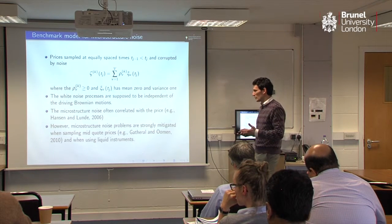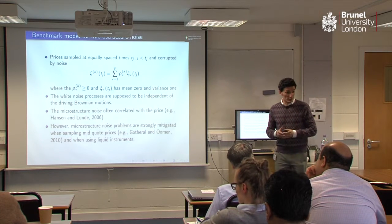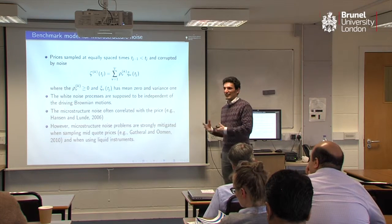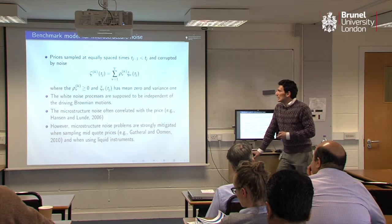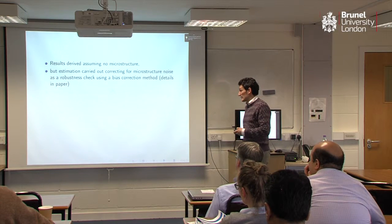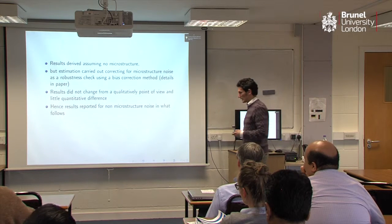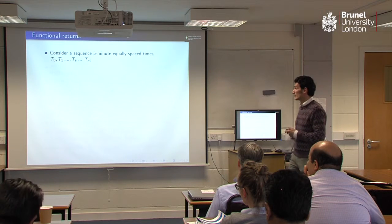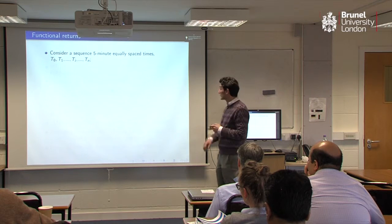Other models where prices are correlated with the market microstructure may give substantially different results, so it is important to know what I checked as a robustness. I only checked for this sort of alternative model. The results are derived without market microstructure, and when I correct for it they weren't particularly different — the results were qualitatively the same, which I think is important. So let me try to define what I call functional returns.